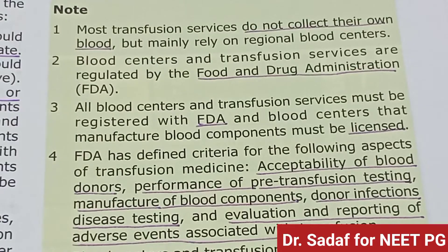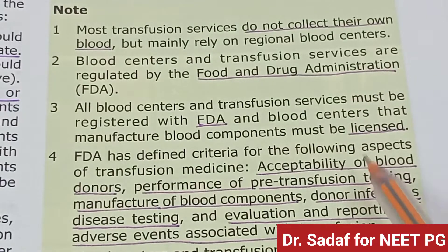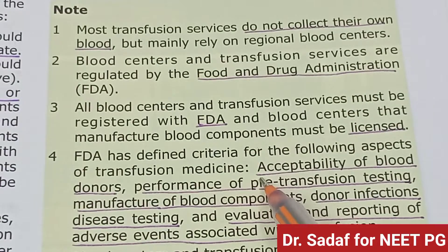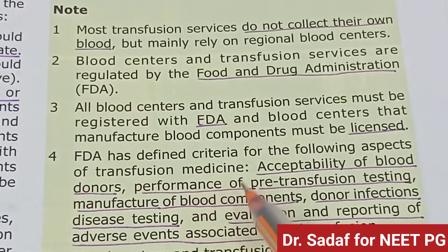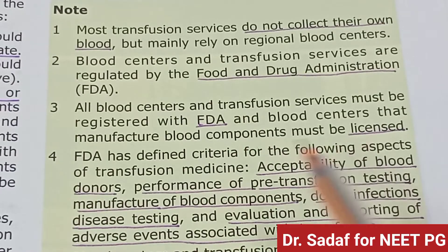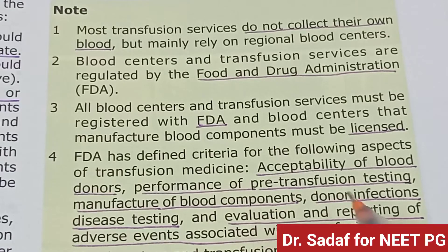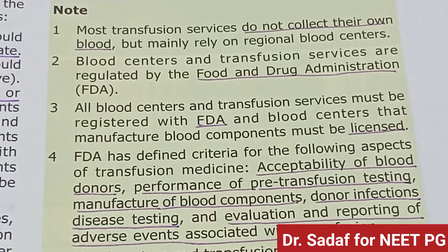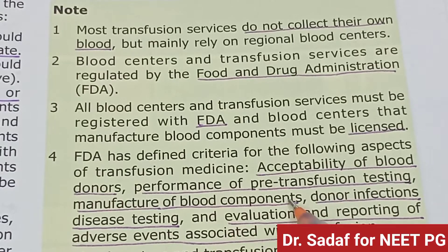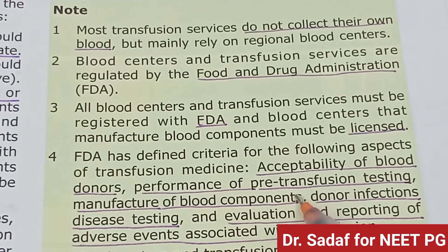FDA has defined criteria for the following aspects of transfusion medicine: acceptability of the blood donor, performance of pre-transfusion testing, manufacturing of blood components, donor infectious disease testing, and evaluation of pre-transfusion.